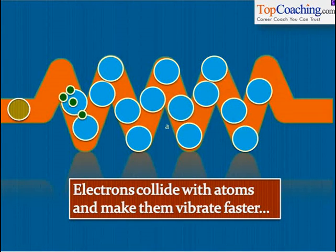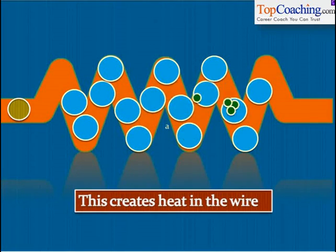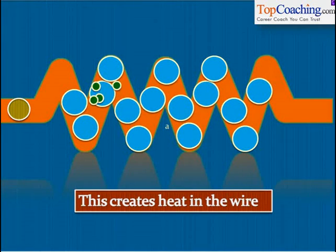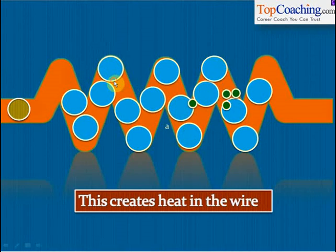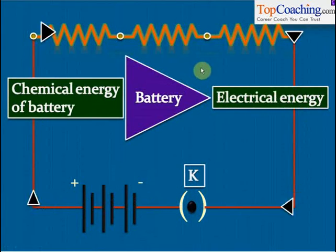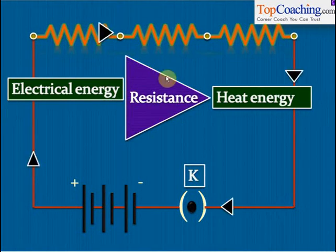When the electrons collide with the positively charged particles, they also make those particles vibrate faster, and because of that the temperature of the resistance increases — heat in the wire gets generated. So the electrons lose their electrical energy in the form of heat energy. They give away their heat energy to the positive and neutral particles present in the resistor, making them vibrate faster. So the resistance becomes hot and the electrical energy of the electrons gets converted into heat energy. That is why a battery needs to constantly have chemical reactions and supply electrical energy.